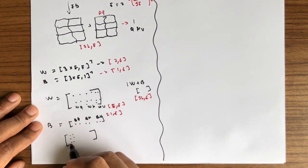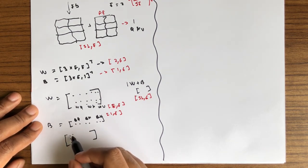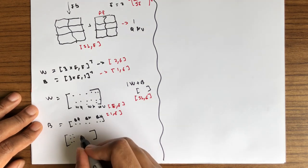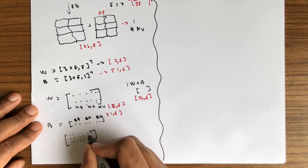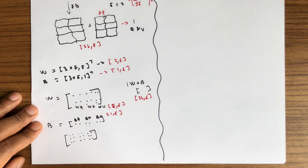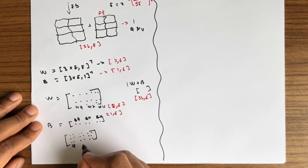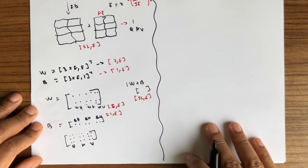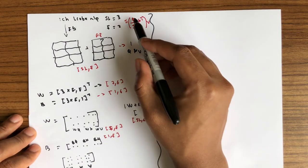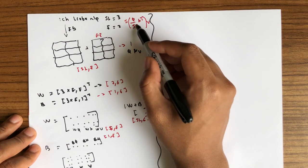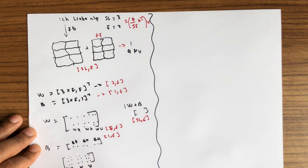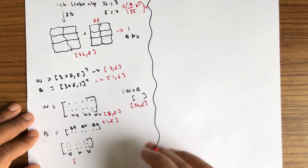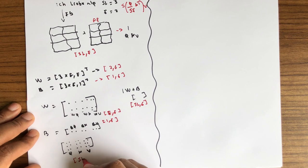The resulting tensor contains values — for example, 0.1, 0.5, and so on. This is the result of the computation, and this gives us our new query, our new key, and our new value. Going back to the formula, we need to divide the query by the square root of e. Each of query, key, and value will have a dimension of sl by e.